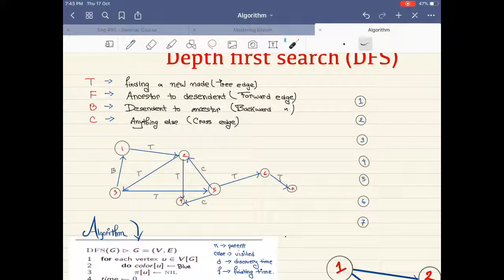There are multiple edges in this example. We have to understand which edge represents what. There are four that we have to keep in mind. The first one is the tree edge, where with this edge we are actually finding new nodes.